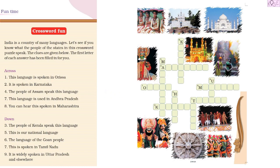We have to fill in each box with a letter, and the hints are given. There are two sections: across and down. Across means the words that we have to write horizontally. The first, second, seventh, and eighth ones are across. Down ones are vertical — like the third, fifth, sixth, seventh, and ninth.